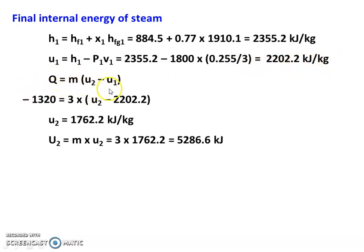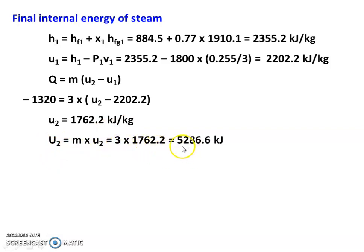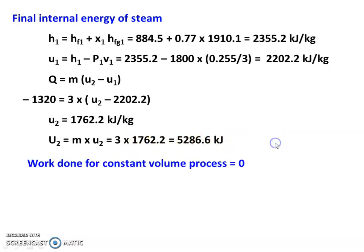For a constant volume process, Q = M·(U2 − U1). Substituting: −1320 = 3×(U2 − 2202.2). Solving: U2 = 1762.2 kJ/kg (specific internal energy). Total final internal energy: capital U2 = M × u2 = 3 × 1762.2 = 5286.6 kJ. Work done for the constant volume process = 0. Summary: initial dryness fraction = 0.77; final internal energy = 5286.6 kJ; work done = 0.